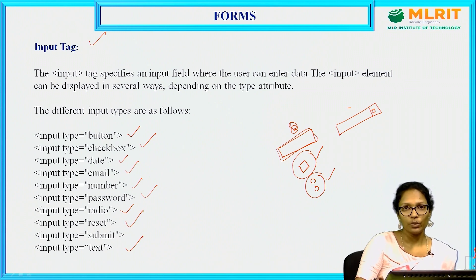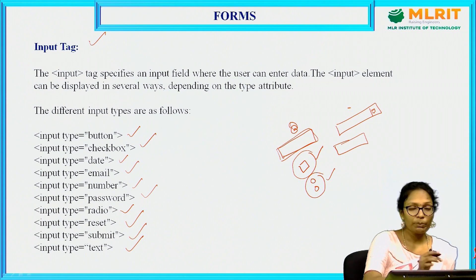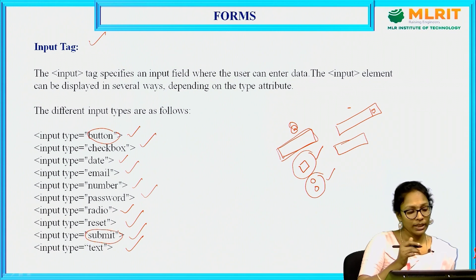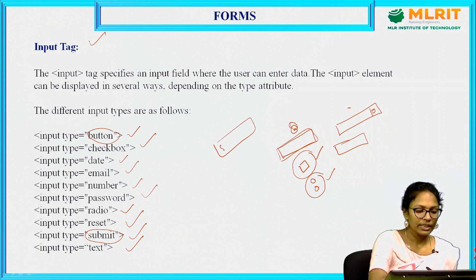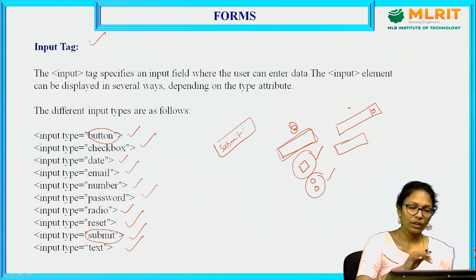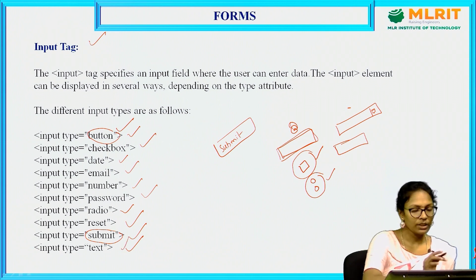Next is input type equal to reset — this is also a type of button. If I click on the reset button, all the fields you have entered will be erased. Next is input type equal to submit — it is similar to input type button, both create buttons. But the submit button's purpose is to submit the details. For navigation like 'go back' or 'go next', you use type as button. The last one, input type equal to text — for fields like first name, last name, father's name, mother's name, you use input type equal to text.